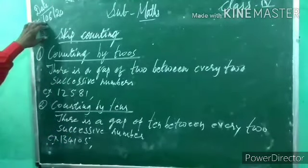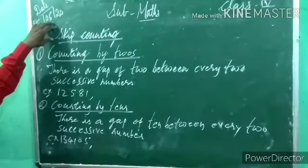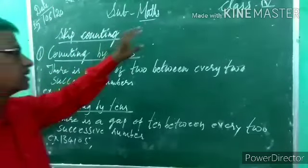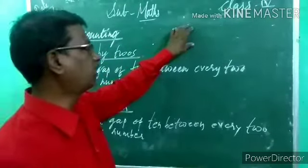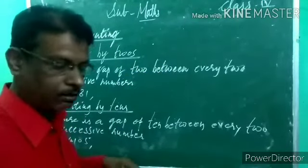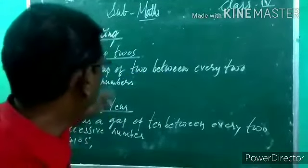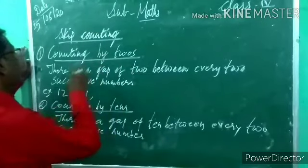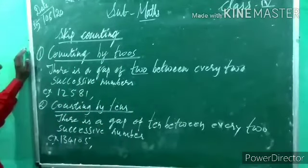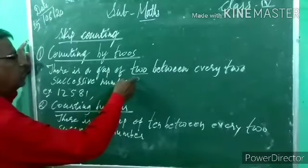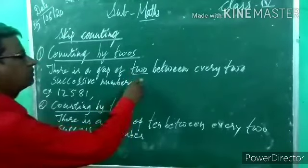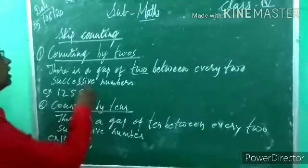What do we mean by skip counting? In skip counting we have to start with a given number with a fixed gap between every two successive numbers. For example, counting by 2s means there is a gap of 2. Counting by 3 means a gap of 3. Counting by 10 means a gap of 10.